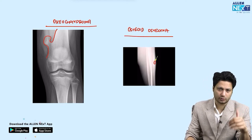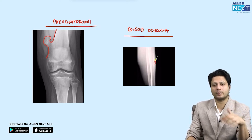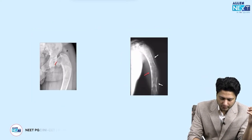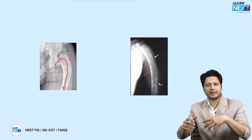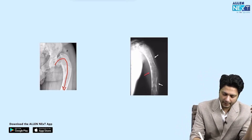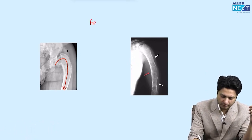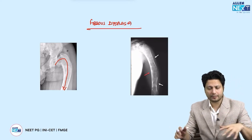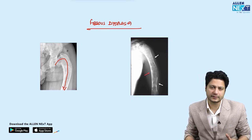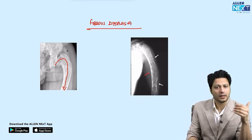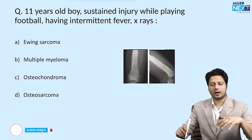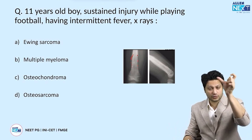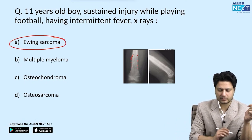A shepherd's crook deformity — where the femur is bent like a shepherd's stick — along with a ground glass appearance, both favor fibrous dysplasia. Fibrous dysplasia related questions are very common and straightforward to identify. For a periosteal reaction seen along the diaphysis of a long bone in a tumor context, Ewing sarcoma is the answer.